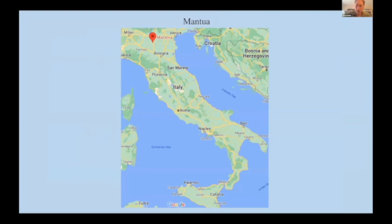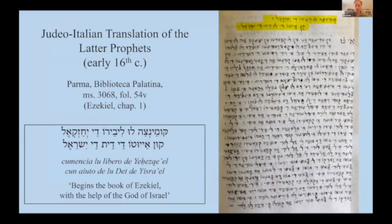Besides all these prayer books, we also have a near-complete translation of the latter prophets copied in the 16th century, now in the library in Parma, which has one of the biggest collections of Hebrew manuscripts in the world. This is the first page of the book of Ezekiel, and the heading reads: 'Cumencia lu libero' — the book begins.